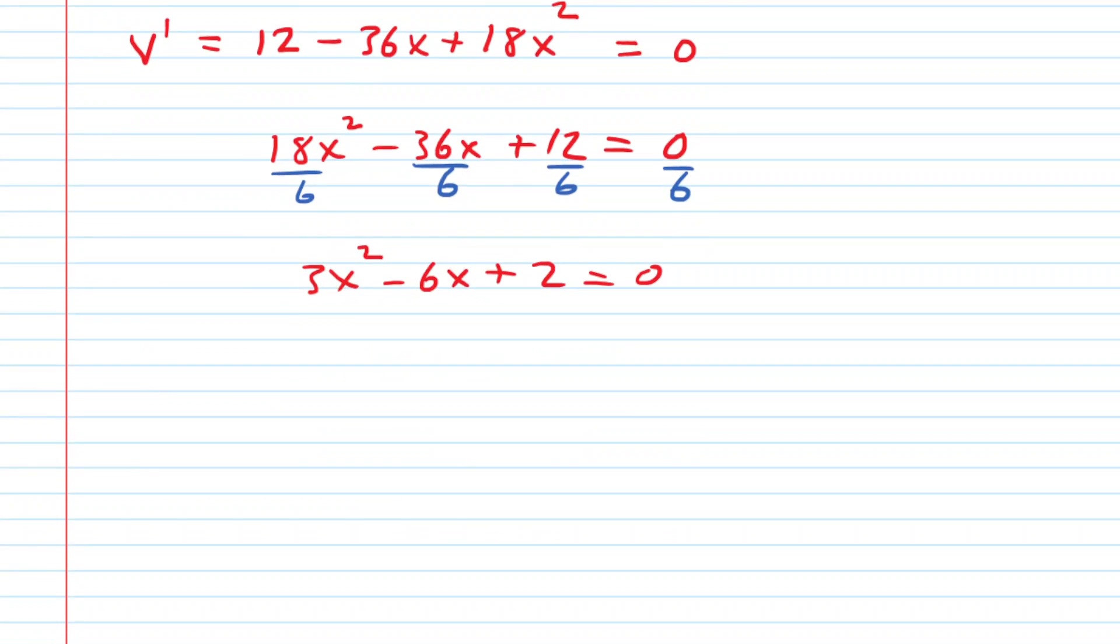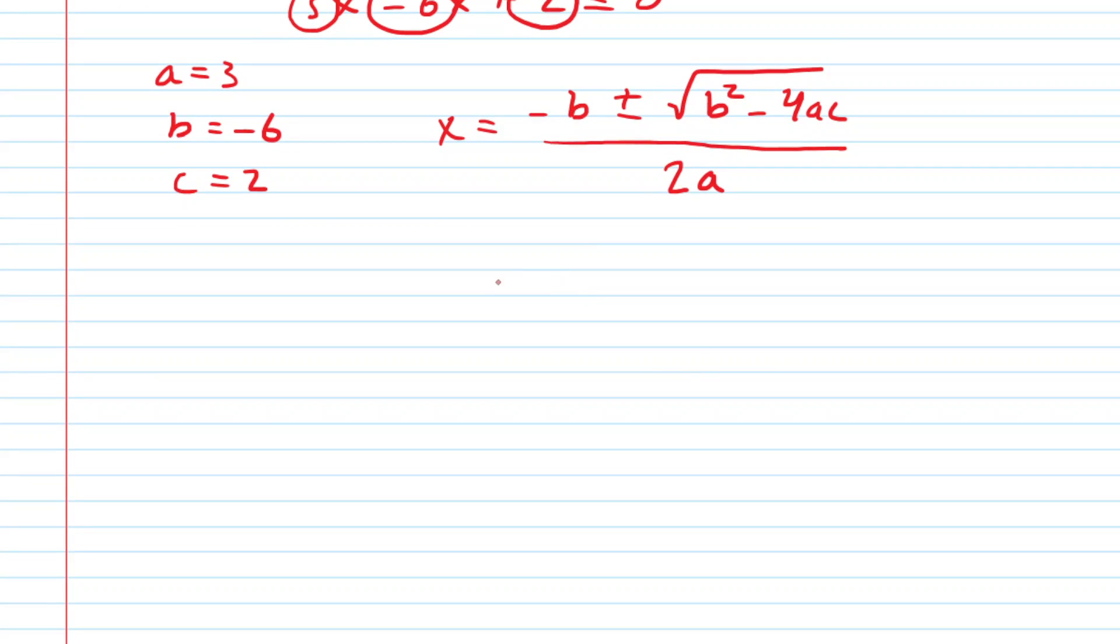Now this does not factor unfortunately, so we'll have to use the quadratic formula. Recall for the quadratic formula we have our a is equal to 3, our b is equal to negative 6, and then our c is equal to 2, and then we'll go ahead and write out our quadratic formula. There is our quadratic formula and now we will plug in our a, b, and c.